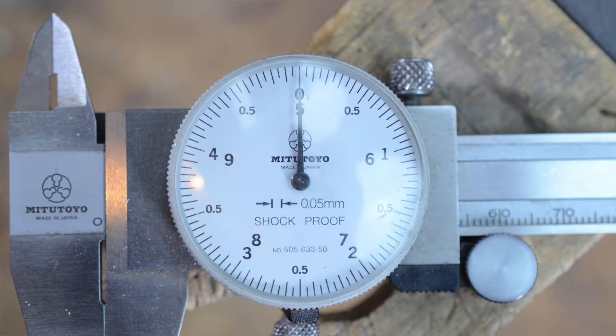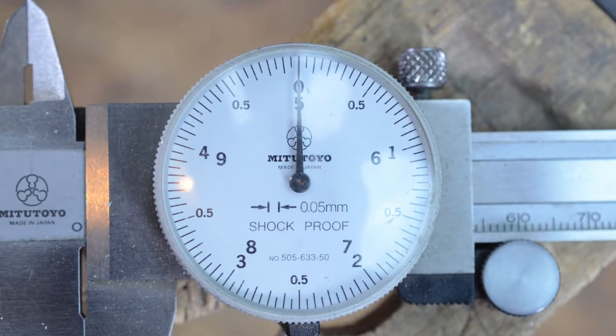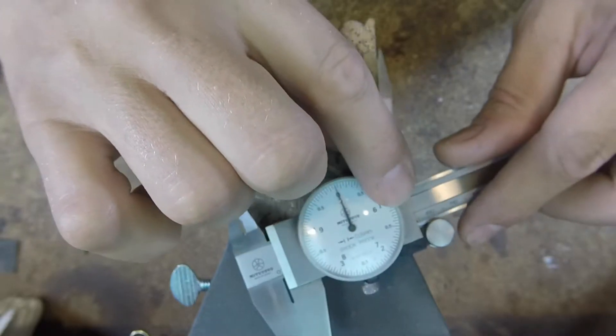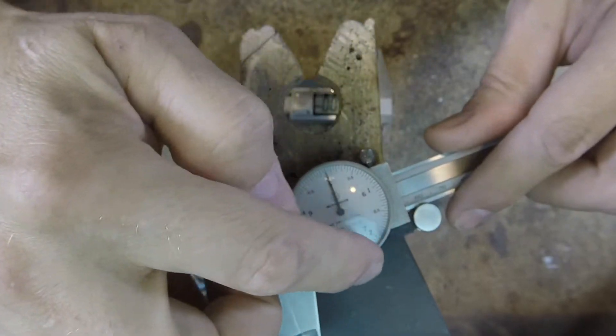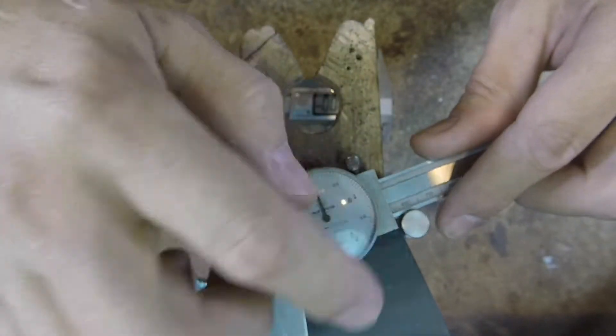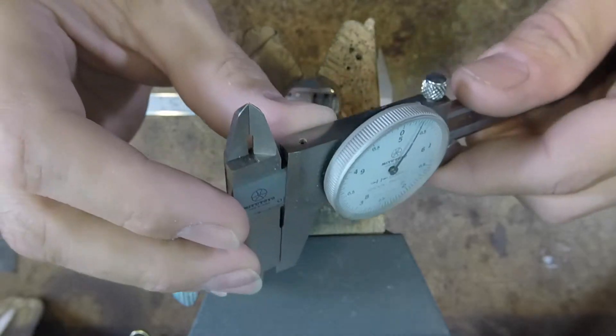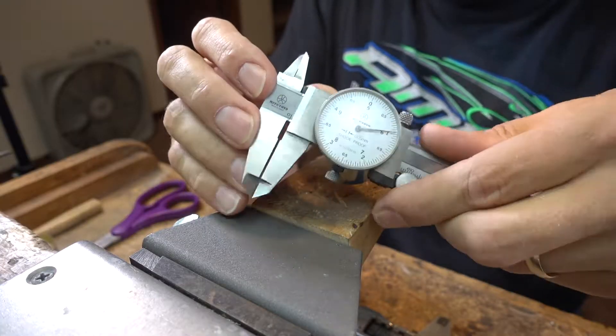So if you look at the dial, it goes from 0.5 to 1.5, 2, 3. So actually each one of those is a millimeter. If I open this up to there, that's one millimeter.